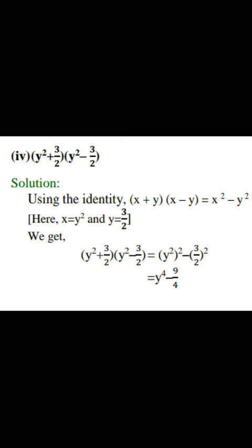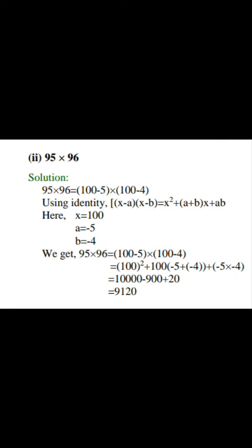Next question is 95 multiply 96. You can use (x+a)(x+b) = x² + (a+b)x + ab. Here a will be -5 and b will be -4. Same as in the previous question, we also put value in a and b and then it will be solved.